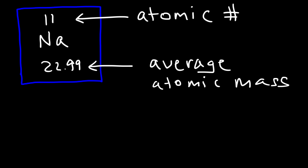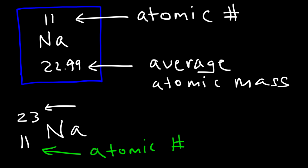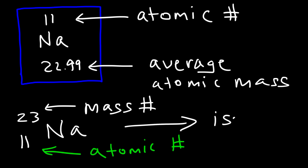Sometimes you might see a problem that's written this way — they may tell you to find the number of protons, neutrons, and electrons for this particular element. In this format, you can see that the atomic number is on the bottom. The number on the top — notice that it's not the same as 22.99; in fact, it's rounded. This is not the average atomic mass, but rather it is the mass number. So this is a specific isotope of sodium.